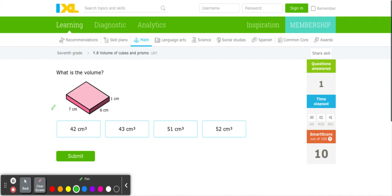Let's try one more. So this is the same thing. 7 times 6 equals 42, times 1 equals 42. So we have 42 right here.